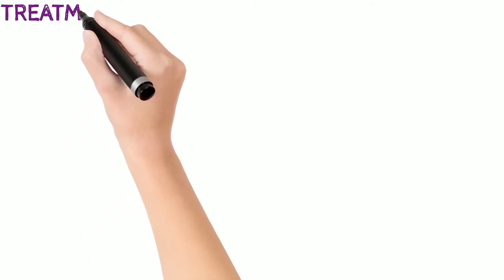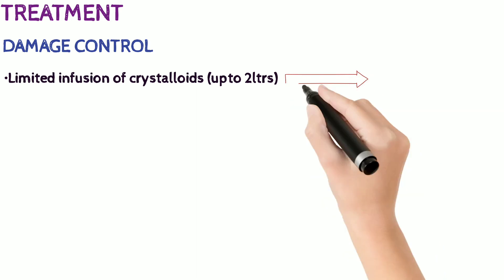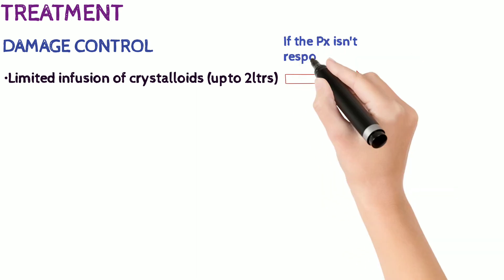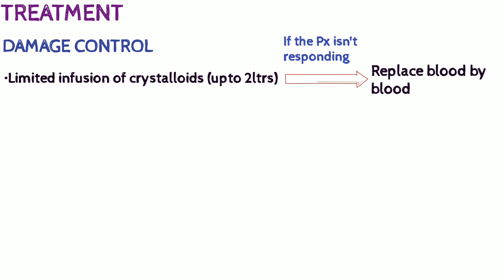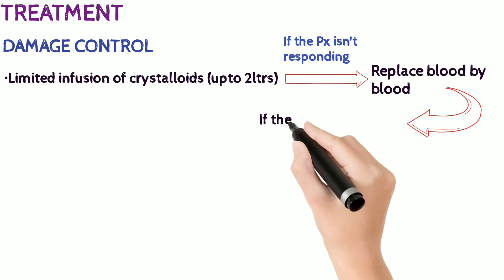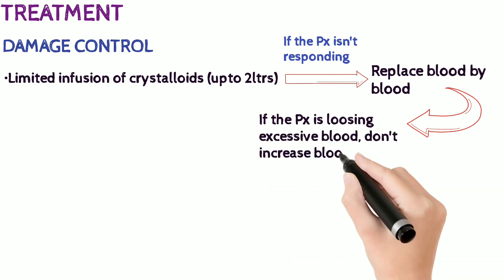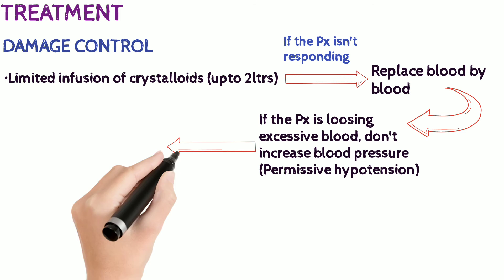As for the management, the primary treatment of shock involves damage control. We do limited infusion of crystalloids first — around 2 liters is the upper limit — but if the patient is not responding well, we don't keep adding fluid; rather, we replace blood with blood. And if the patient is losing excessive blood, we do not increase the blood pressure — that is, we allow permissive hypotension.